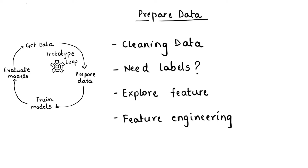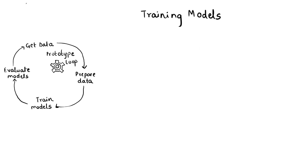Once the data has been prepared, the next step is model build and training. This stage consists of choosing the correct machine learning models to solve the problem and deciding what features to include. Data scientists need to decide what the appropriate machine learning model might be, and typically they try different models and algorithms, generating multiple model candidates, because they may have a hunch but won't have confident knowledge of which model will perform best on the data set.